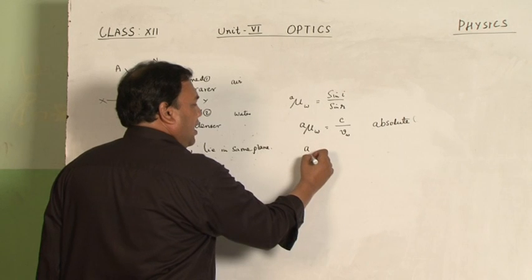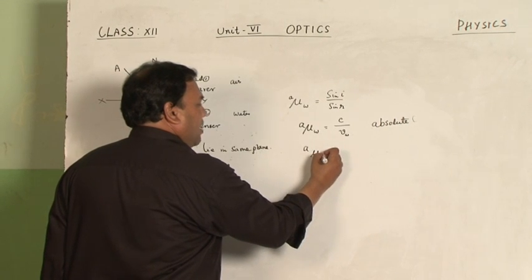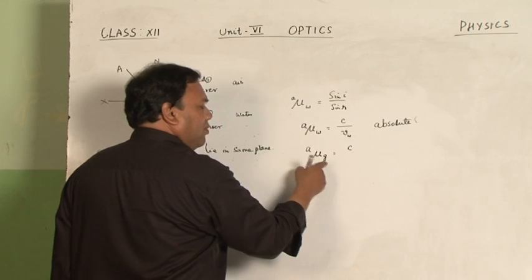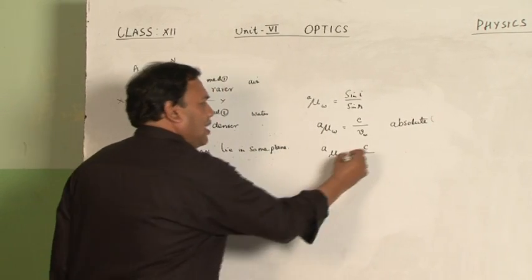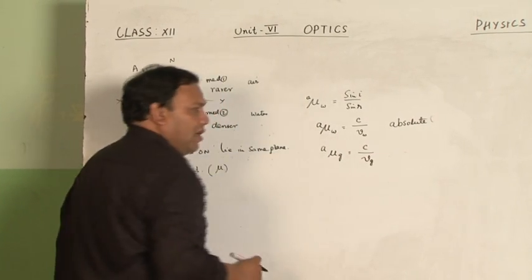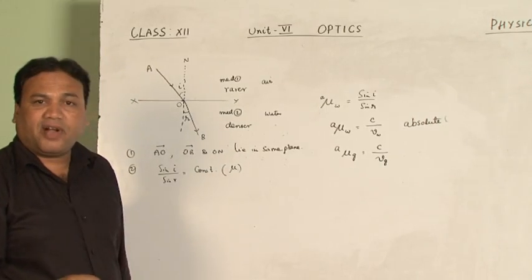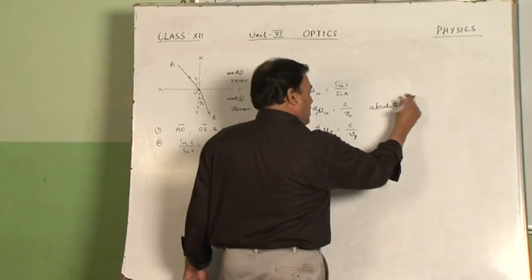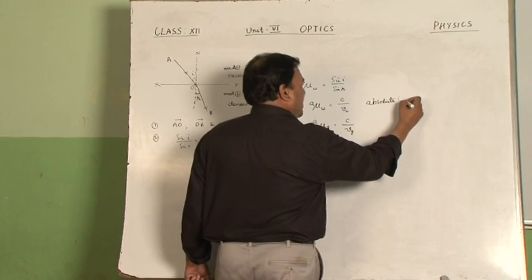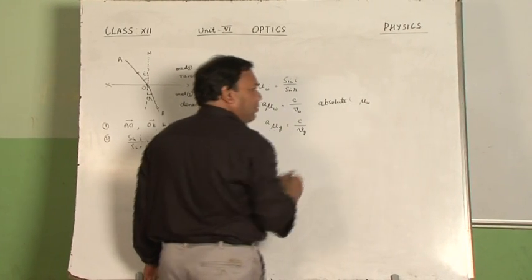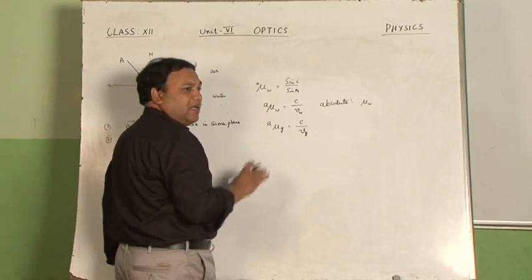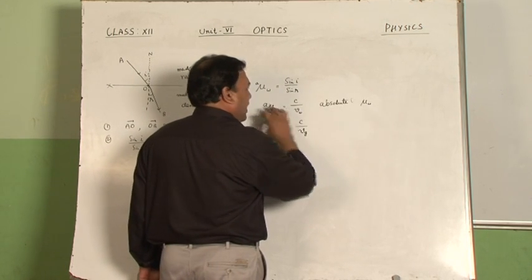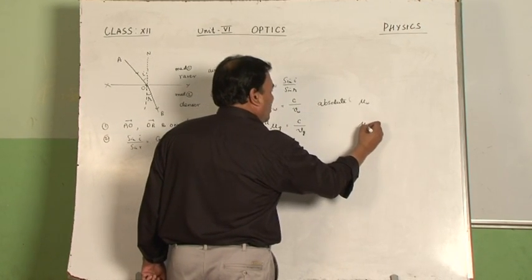Similarly, if I take the second medium as glass, then I can write A mu g equal to C upon V_g. This is called the absolute refractive index of glass. In another way, it can also be represented: simply write mu_w — the A can be dropped. Here also it is mu_g.